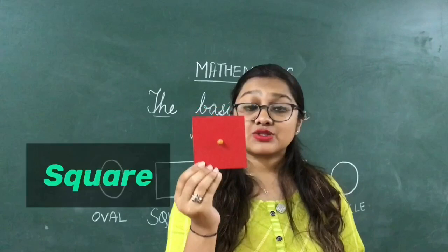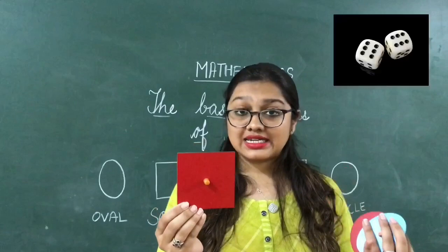Very good. Which is this shape? Square. Let us discuss some examples of square: die, cardboard, chessboard.